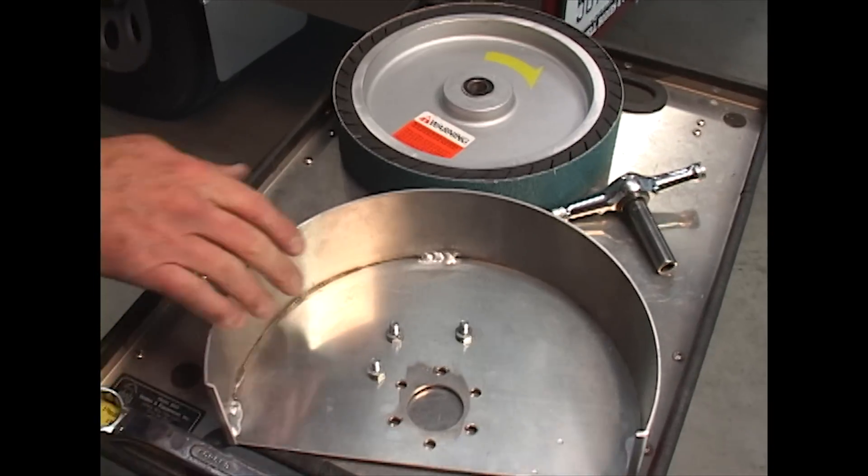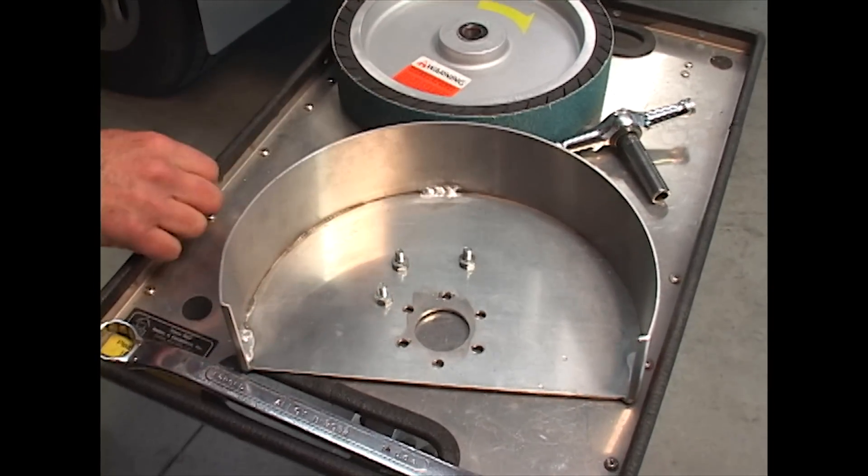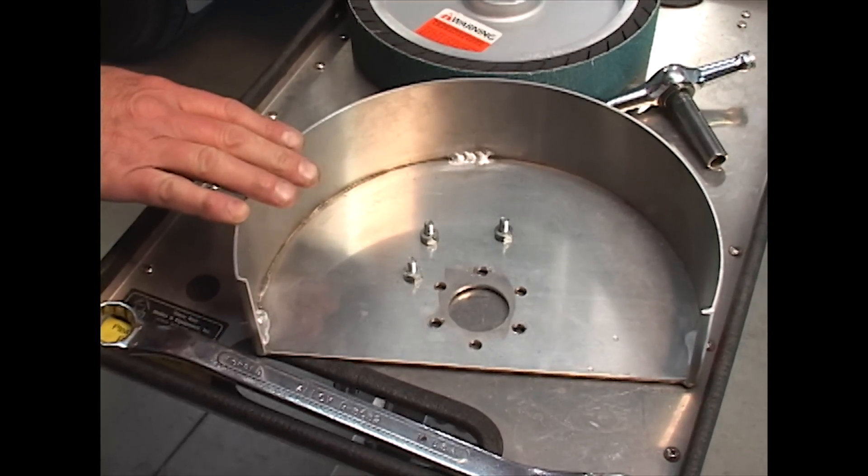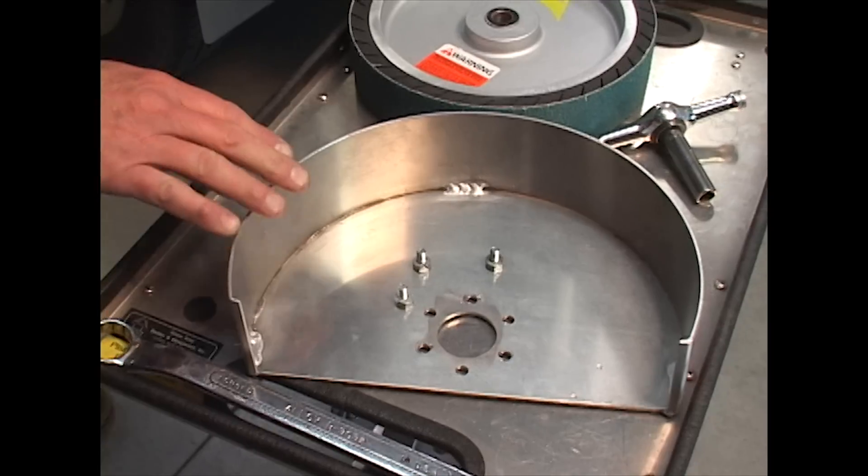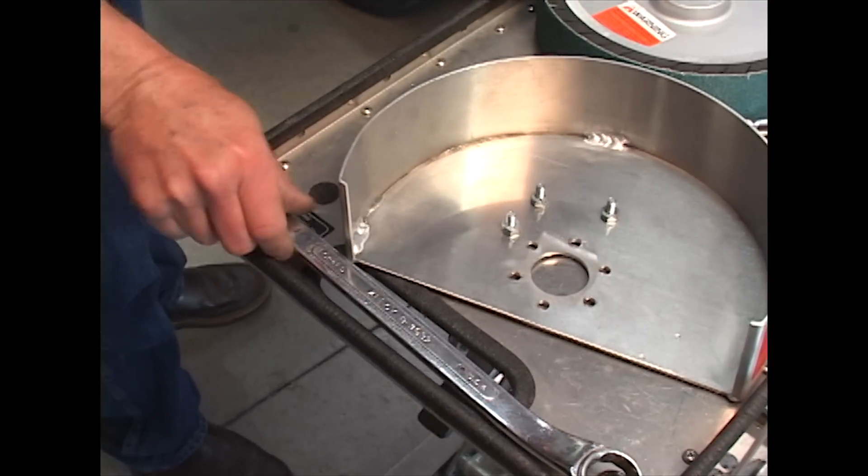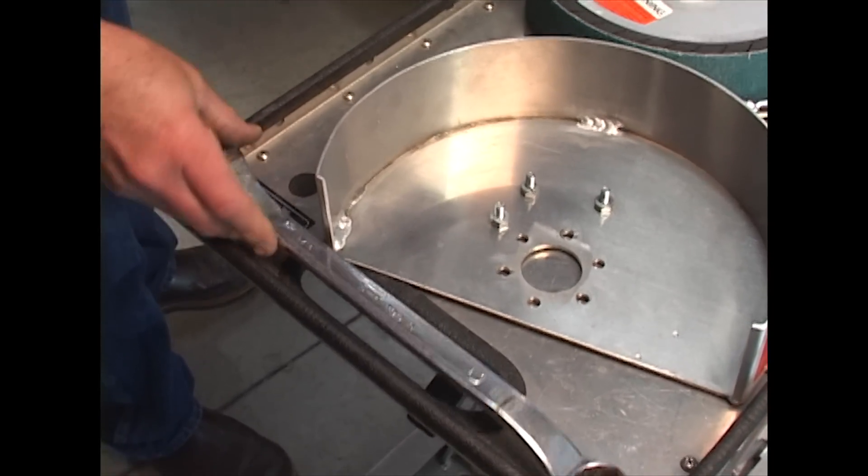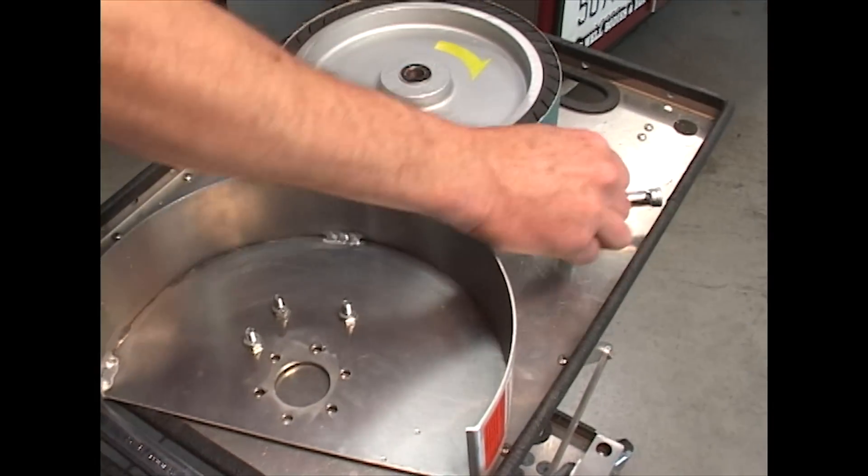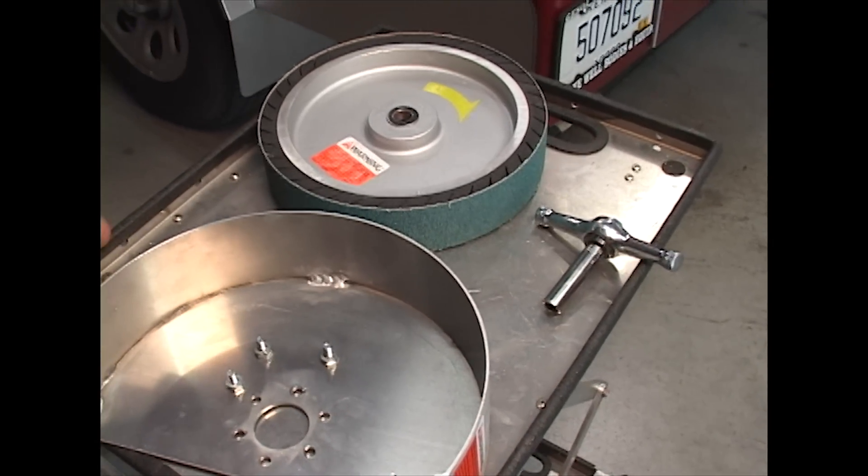You have your guard and you have your three bolts to attach the guard to the Baldor unit. The tools you will need for that is a 15-16 wrench and a 7-16 socket wrench.